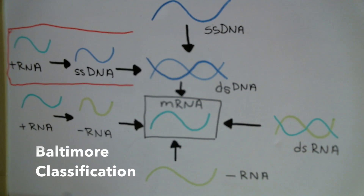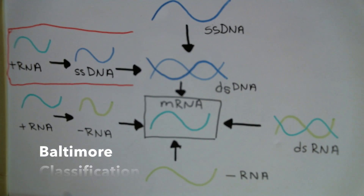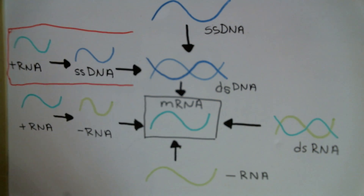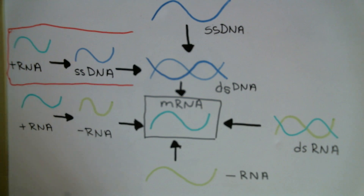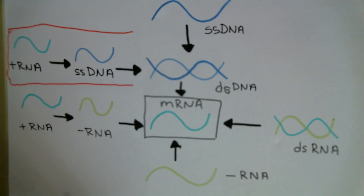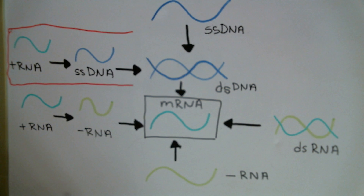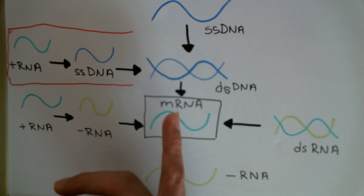Here we have a basic sketch of the Baltimore classification, which you should all have in your notes. There are various types of genetic material a virus can have, and all they want to do is get to making mRNA. When they make that mRNA, they can follow translation and make the proteins they need in order to make all the viral components. There are one of two ways this can happen: either the virus can bring in its own machinery, which can then read its genetic material in order to make the mRNA.